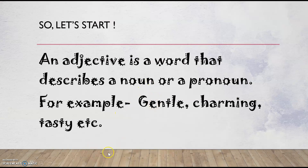An adjective is the word that describes a noun or a pronoun. For example: gentle, charming, tasty, etc. A noun is a person, place, animal, or thing.